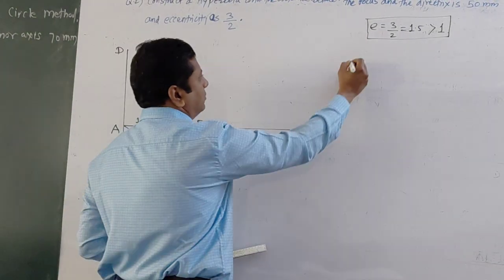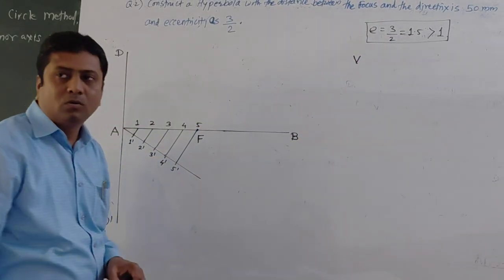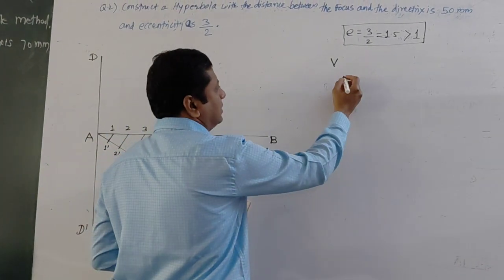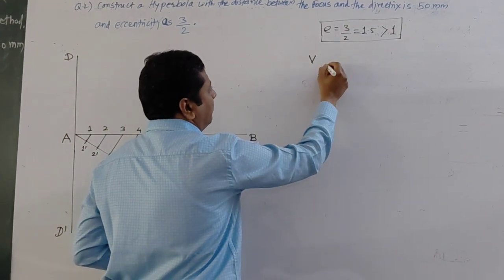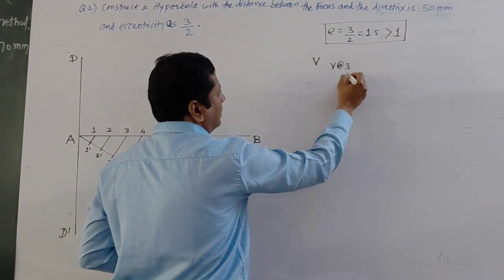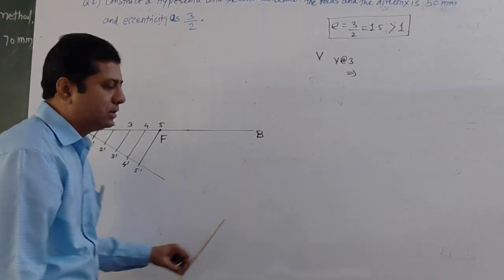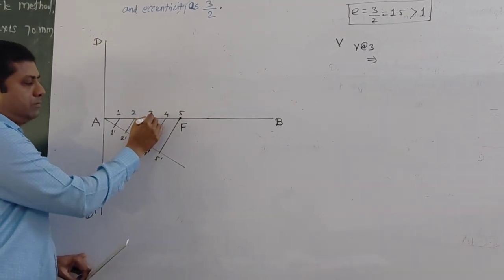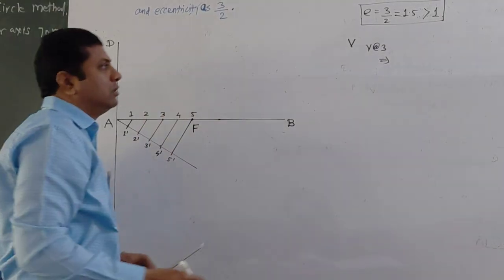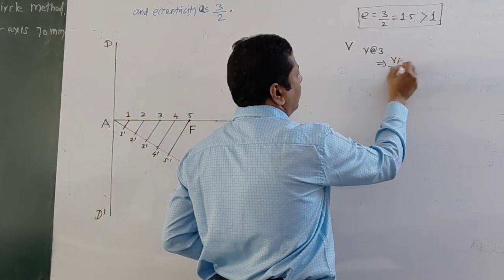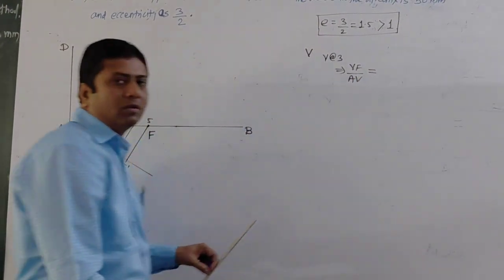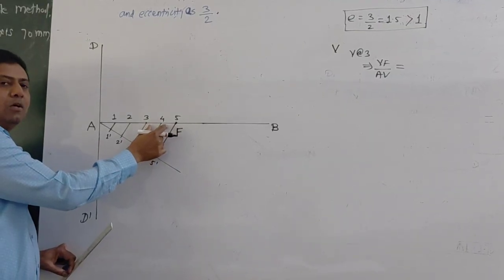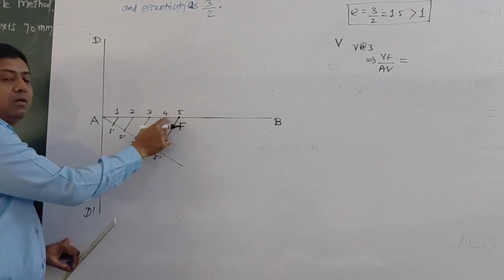Next, you have to locate vertex V. To locate V, the eccentricity condition must be satisfied — eccentricity is 3 by 2. Suppose V is at point 3: then VF upon AV equals 20 divided by 30, which does not equal 3 by 2, so V at point 3 is not acceptable.